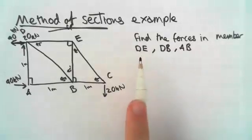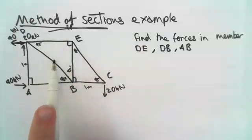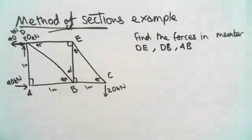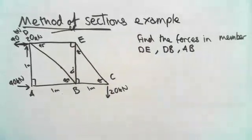Or if the question is only find the forces in member DE, so this one, and DB, so this one, and AB, then this would be a quicker method of doing it, instead of finding them all and then working it out that way.